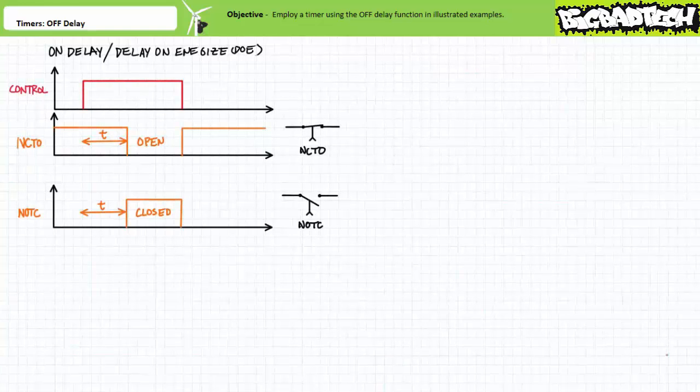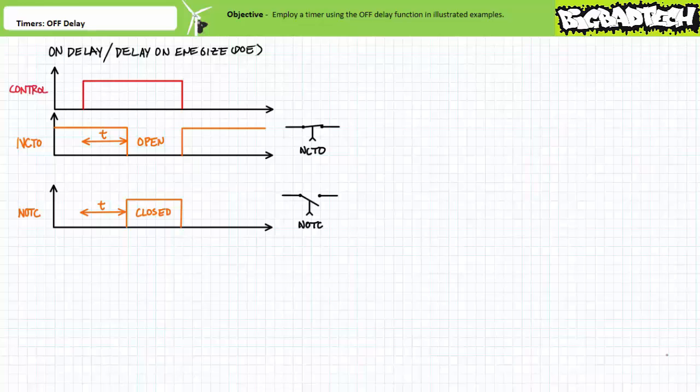Before we dive into an in-depth discussion of the off-delay function, allow me to perform a brief walkthrough and review of the other common timing functions. My intention is not to confuse you, but rather to compare and contrast their behavior with one another. Repeated exposure is the best tactic because similar terms are employed for different functions, and it would be a horrible mistake to confuse one function for another. Expect me to revisit this walkthrough every time we discuss a new function in depth.